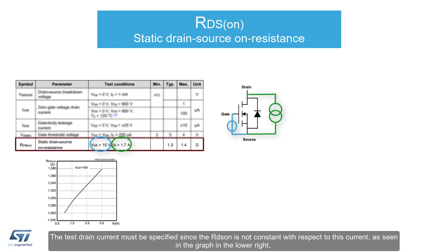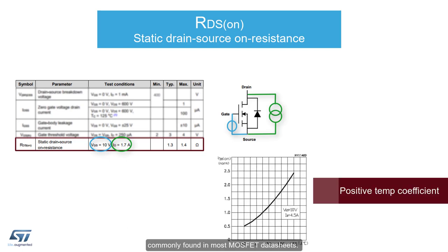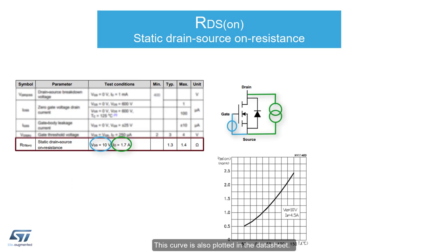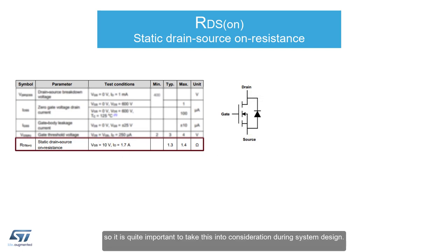The test drain current must be specified, since the RDS-ON is not constant with respect to this current, as seen in the graph in the lower left, commonly found in most MOSFET datasheets. The RDS-ON has a positive temperature coefficient, shown in the lower right graph. This curve is also plotted in the datasheet. The RDS-ON can increase by well over two times at the maximum operating temperature, so it is quite important to take this into consideration during system design.